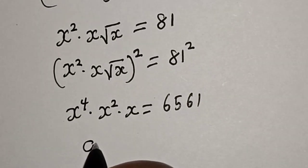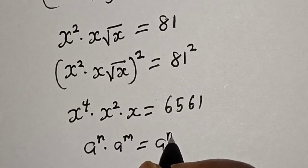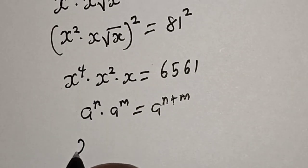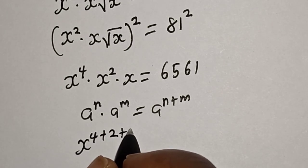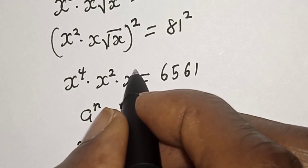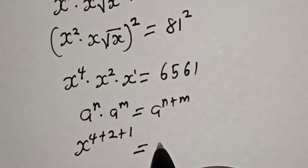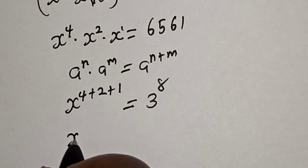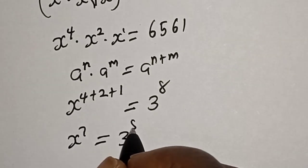Let's apply the product rule: if you remember this rule that a raised to power n multiplied by a raised to power m is equal to a raised to power n plus m, then the left-hand side is s to the power 4 plus 2 plus 1 — because this is also raised to power 1 — is equal to 6561. This is 3 raised to the power 8, and we have s raised to power 7 is equal to 3 raised to power 8.